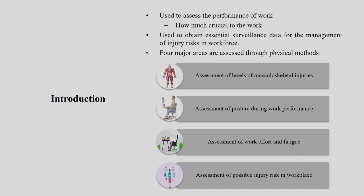Physical methods are used to assess the performance of work — specifically to understand the physical performance of particular work. They are used to obtain essential surveillance data for the management of injury risk in a particular workforce. Whenever we talk about physical methods in ergonomics, it relates to physical injury, physical hazard, and physical risk assessment. Looking at these methods from a broader perspective, there are four basic major categories.